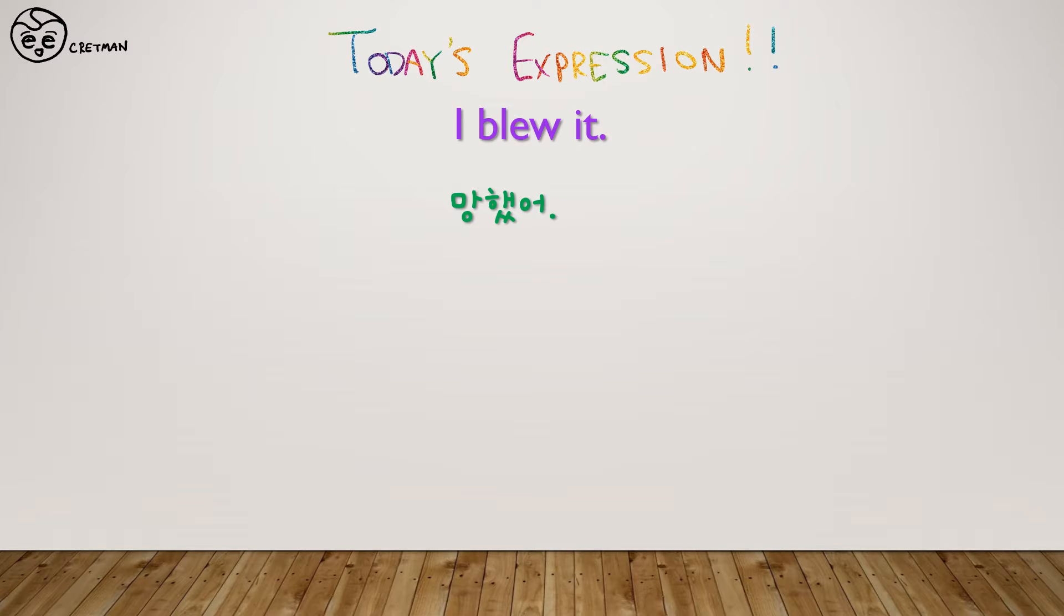좀 그런 느낌. 어떤 문맥이 있을 때 I blew it가 어떤 상황을 가리키는 그런 말이기 때문에 그 어떤 상황을 안에서 내가 망했어. 좀 그런 느낌이기 때문에 앞뒤 문맥 없이 나 망했어. 이렇게는 I blew it를 사용하지 않습니다. 그리고 하나 더 뭐 있냐면